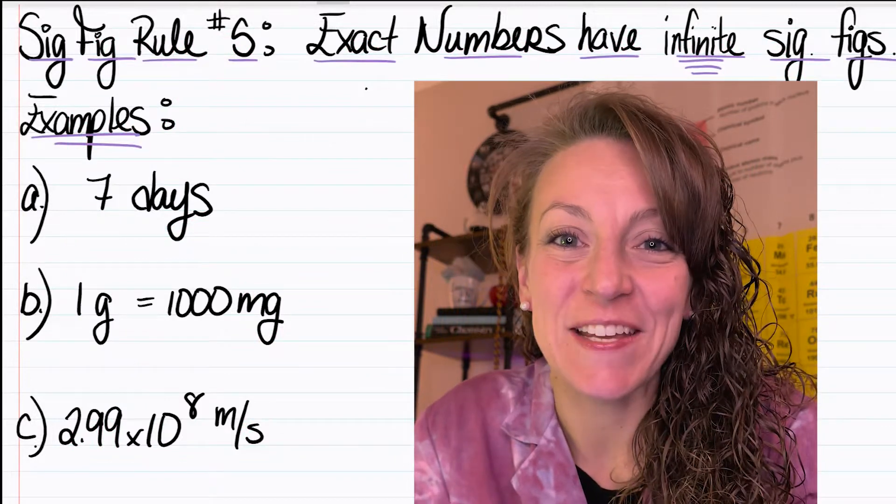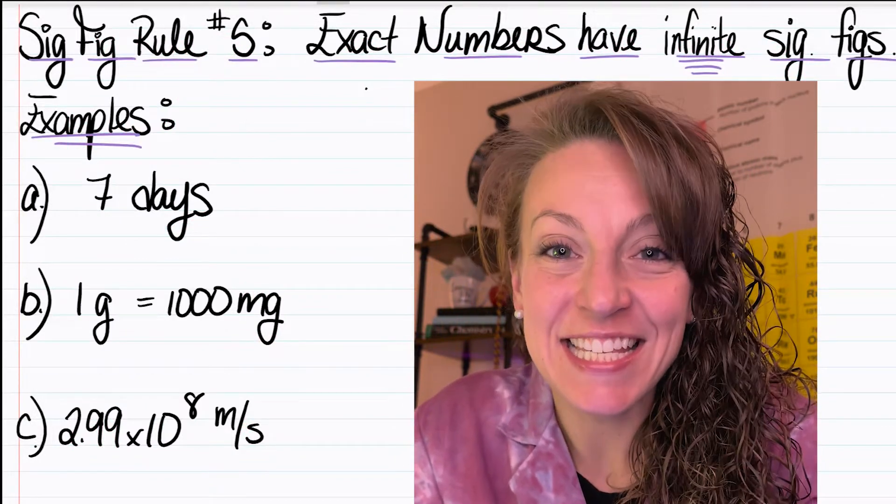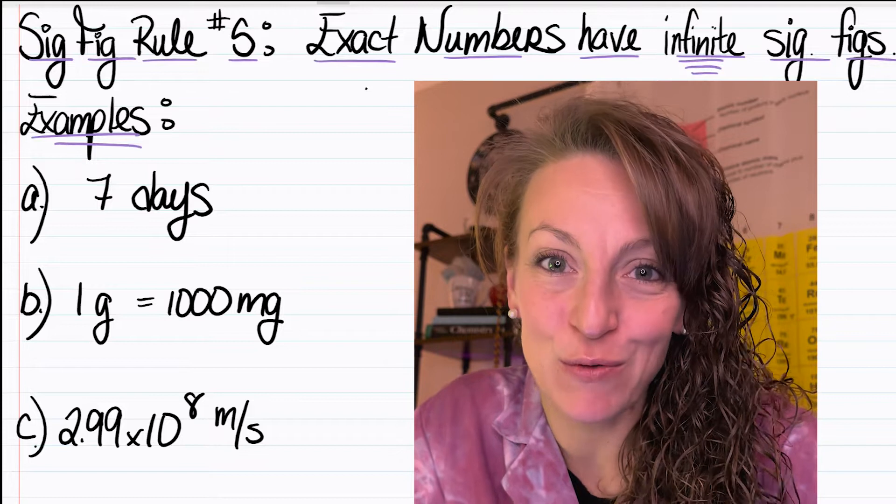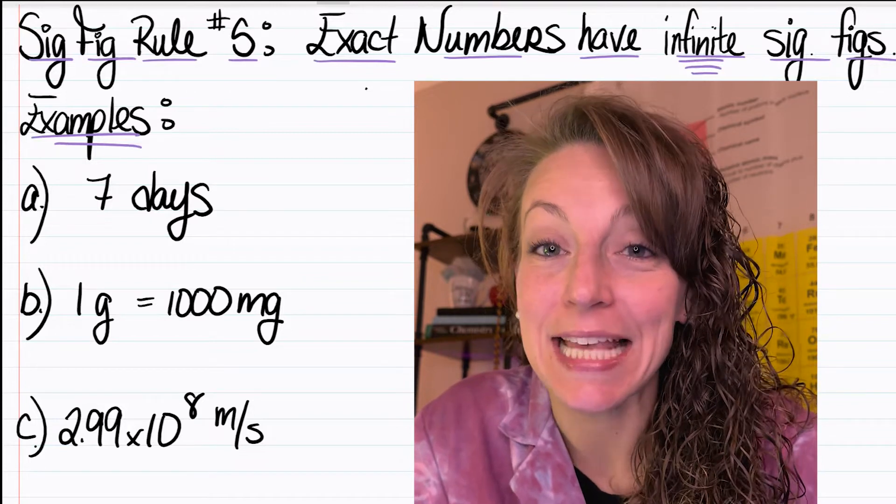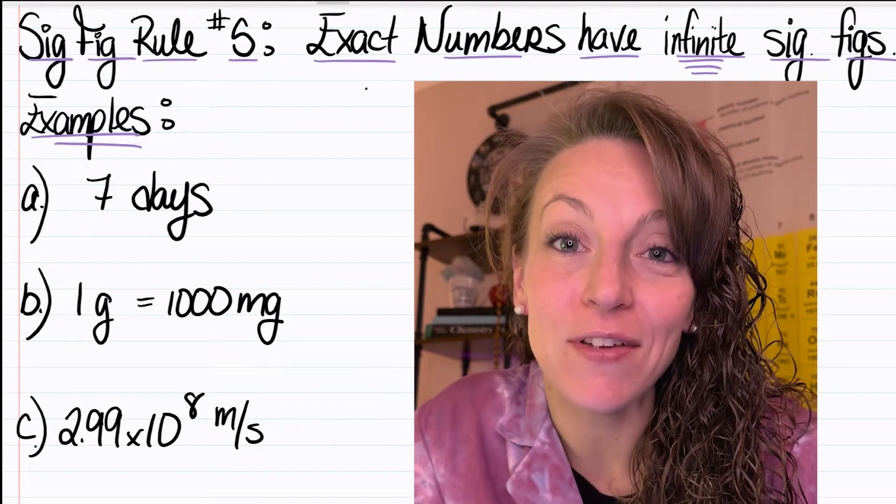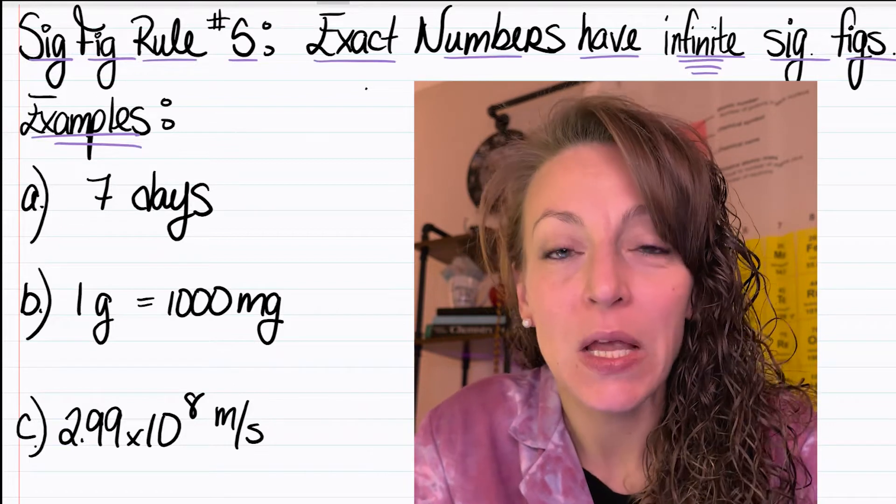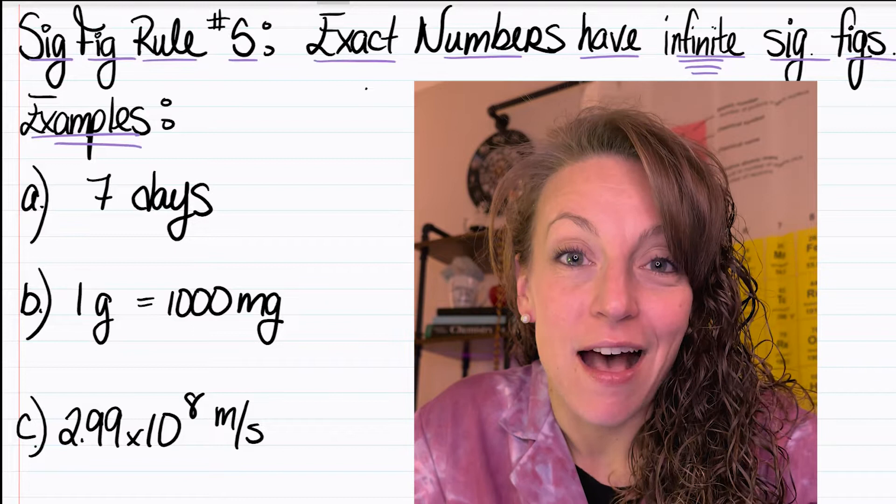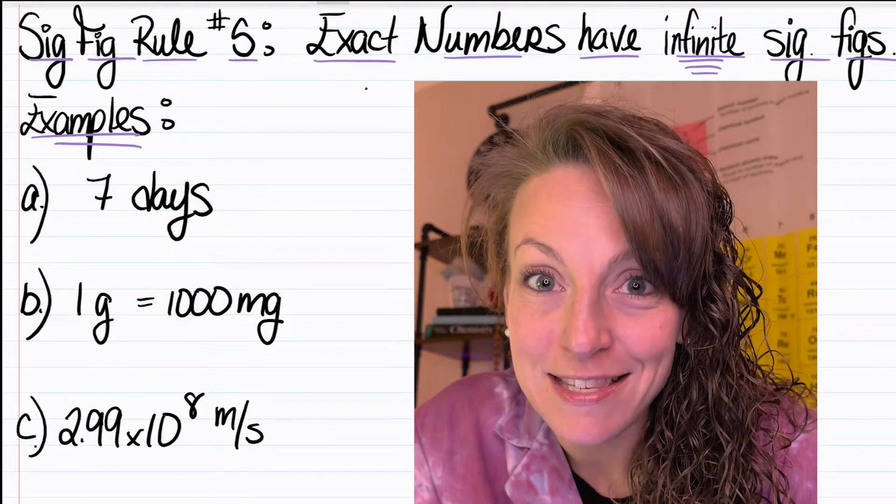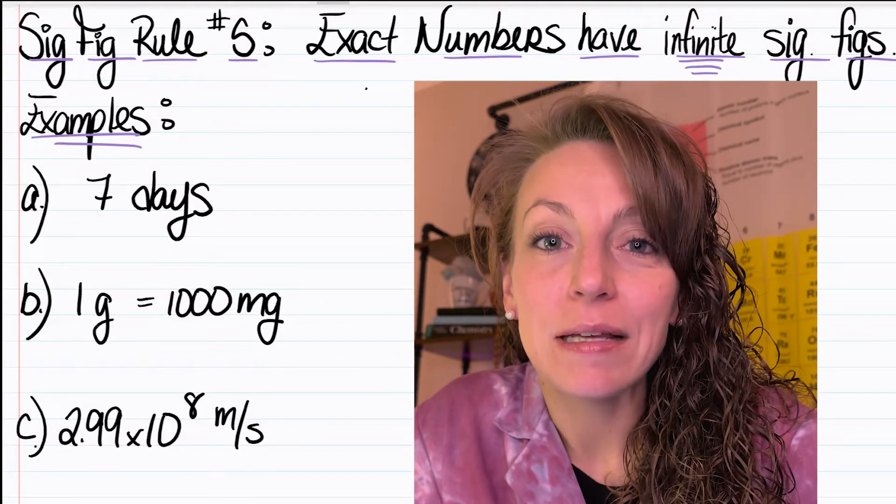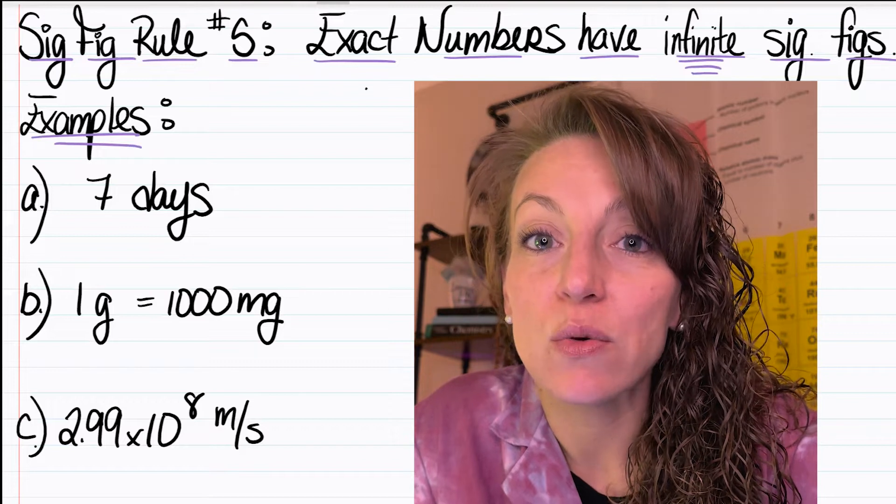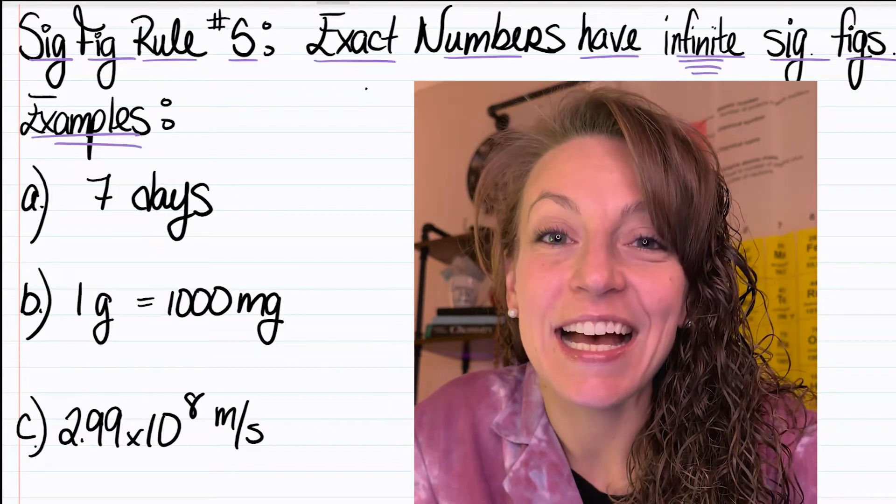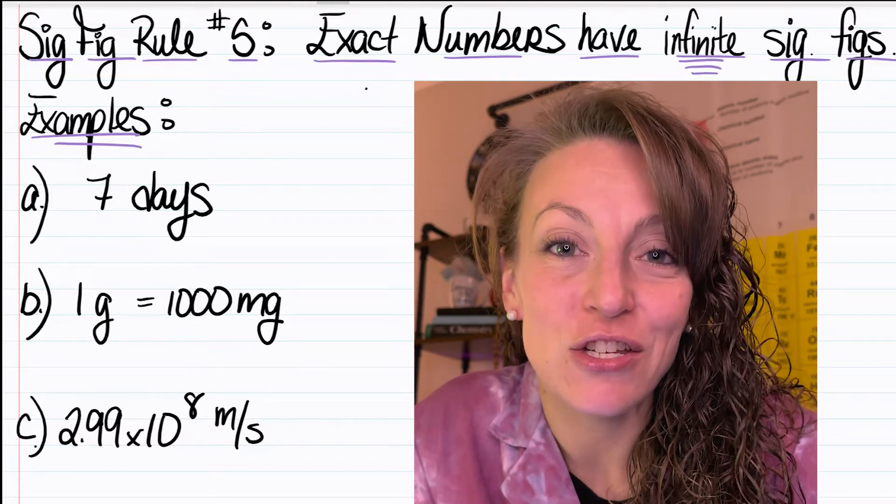Welcome. Let's do some chemistry. In this video, what I'd like to discuss is the fifth significant figure rule, which simply states that exact numbers have an infinite amount of sig figs. What this means is that since exact numbers are not necessarily measurements, they will never limit the number of significant figures you can have in an answer to a calculation using them.